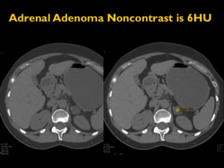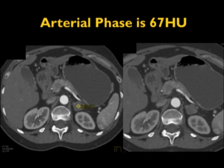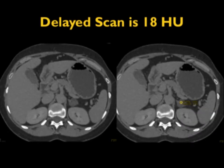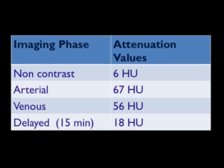Here's a left adrenal adenoma — six Hounsfield units, well-defined, water density. You do not need further studies; if you have that lesion, it's an adenoma. That same case went to 67 HU with arterial phase imaging, 56 HU venous, then washed out to 18 HU. You can see the spectrum: 6 to 67 to 56 to 18. From arterial to venous the washout is minimal, but going to the delayed scan, it washed out far more than 50%, making you very comfortable with an adenoma diagnosis.